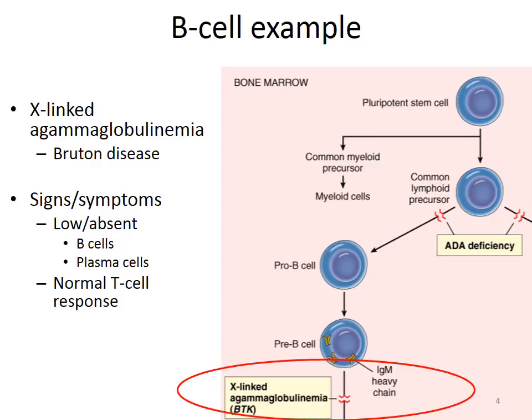Our first B cell example is X-linked agammaglobulinemia, also known as Bruton disease. We move from pluripotent stem cells through normal pro-B cells and pre-B cells, but in this condition we never produce mature B cells, and therefore never produce the antibodies those B cells would normally make. Discovered in 1952, it is a rare X-linked genetic disorder where the body's ability to fight infection is compromised. It is much more common in males because of its X-linked characteristic.